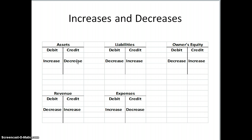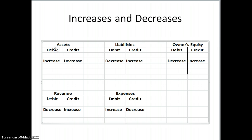What becomes difficult for students is the increase and decrease side. You can see assets have debits on the left and credits on the right, liabilities the same, and so forth. In all of these T-Accounts, debits are on the left and credits are on the right. The difference is the increase and decrease side — depending on what type of account it is, the increase or decrease side may change. An asset like cash will have an increase with the debit and a decrease with the credit. But liabilities will have a decrease with the debit and an increase with the credit. An asset is what you own and a liability is what you owe — they are opposites and behave in an opposite way.